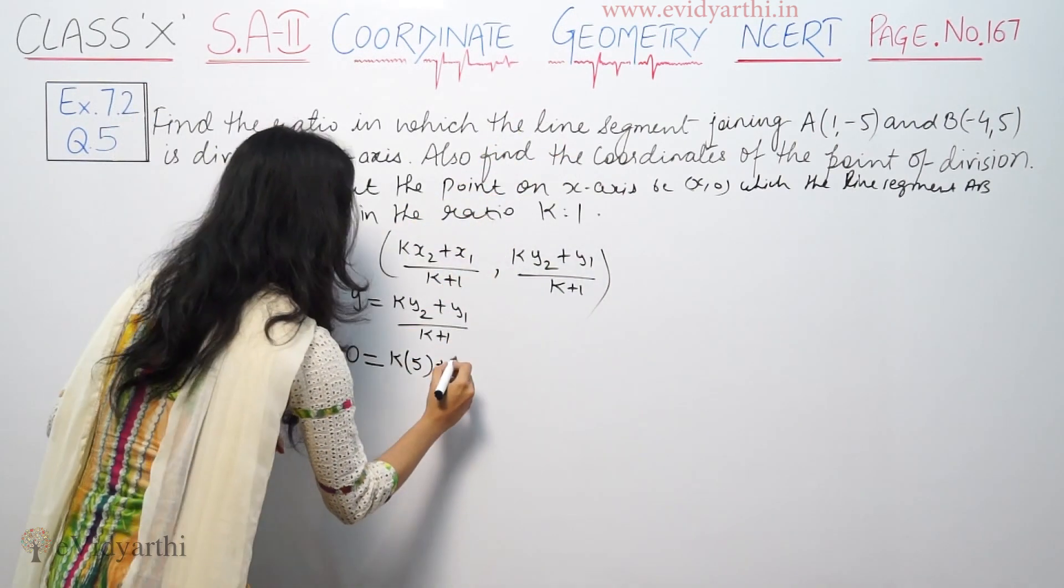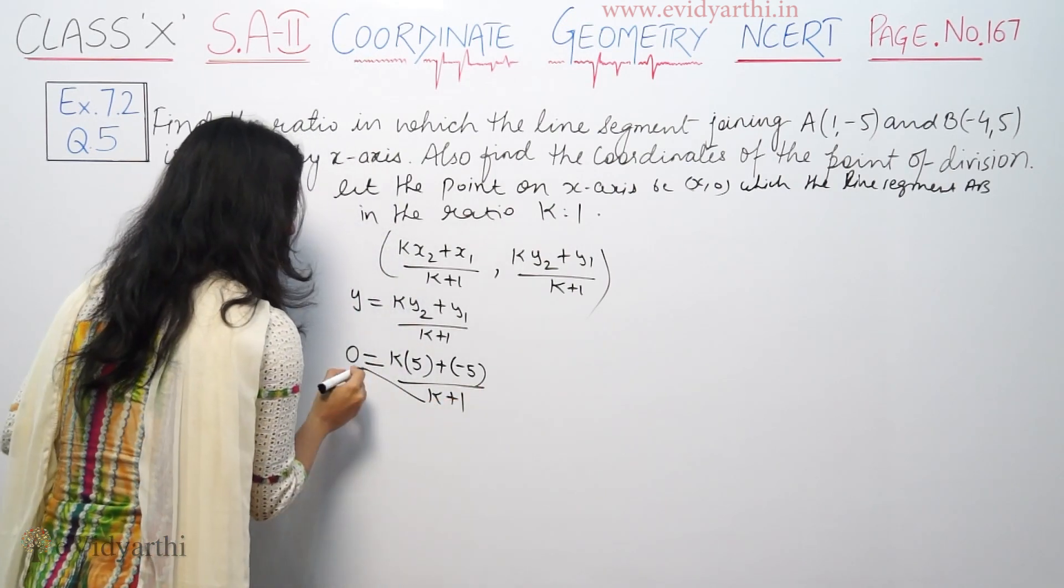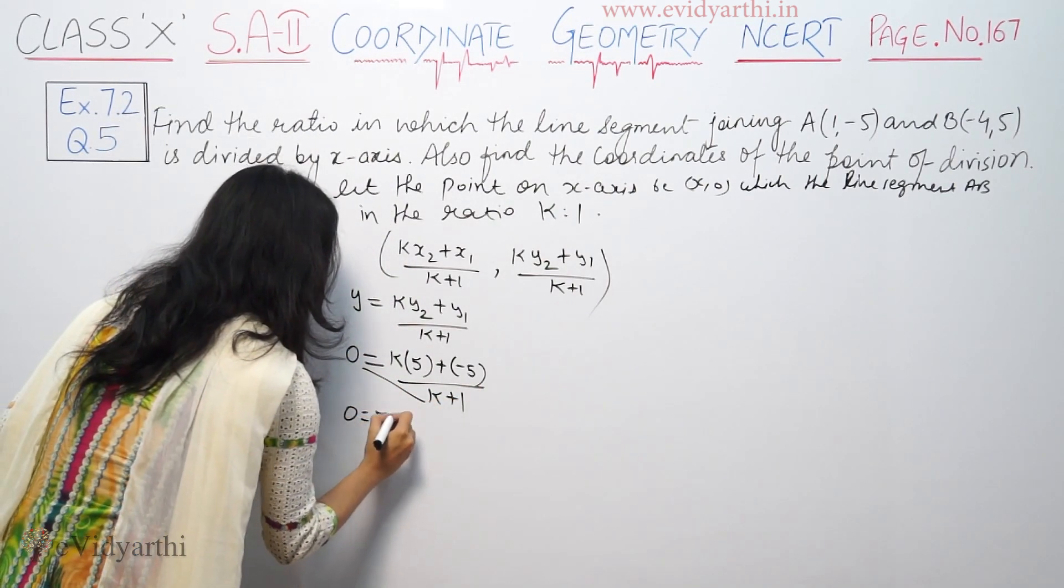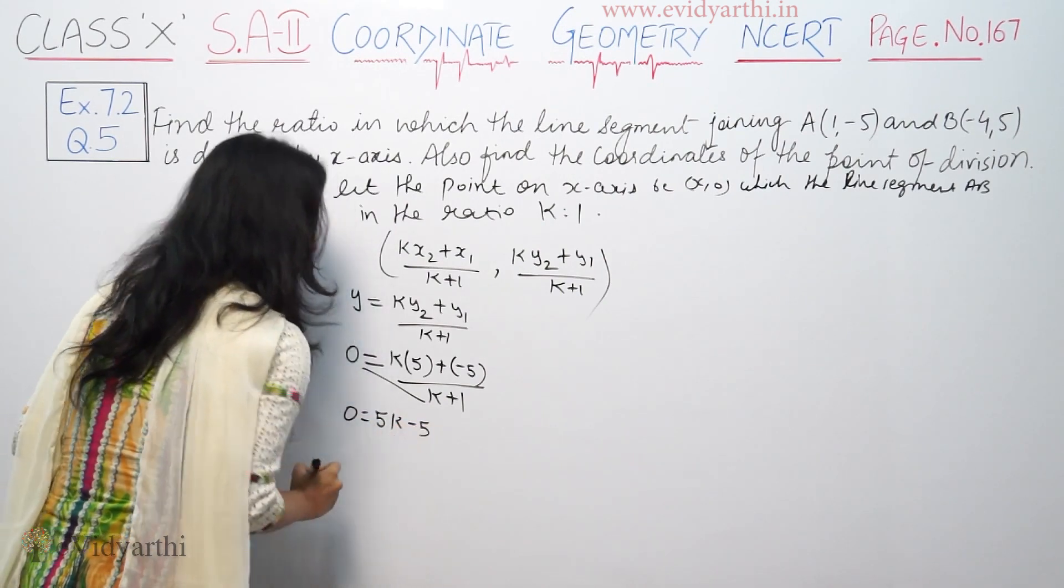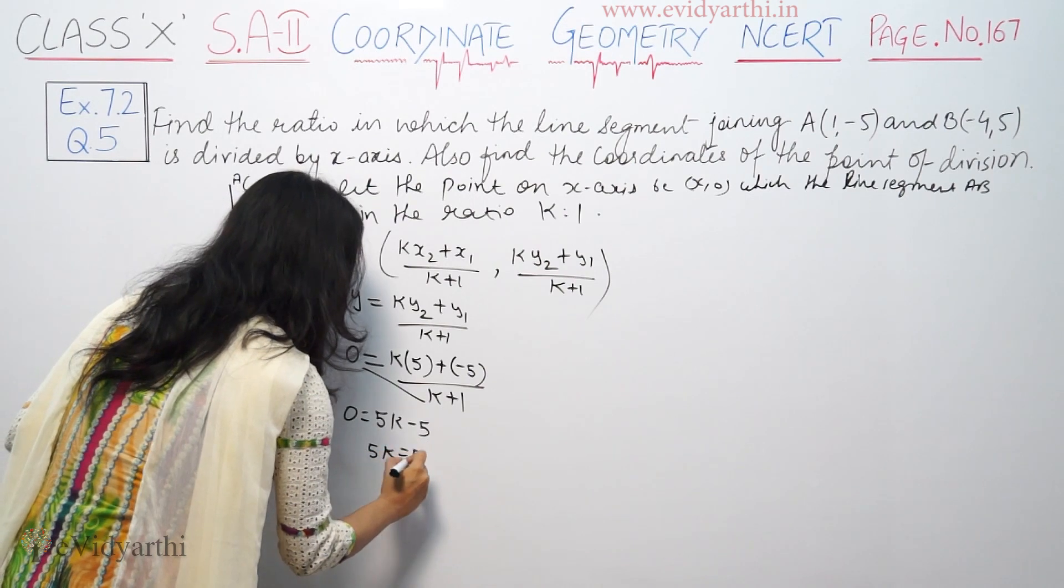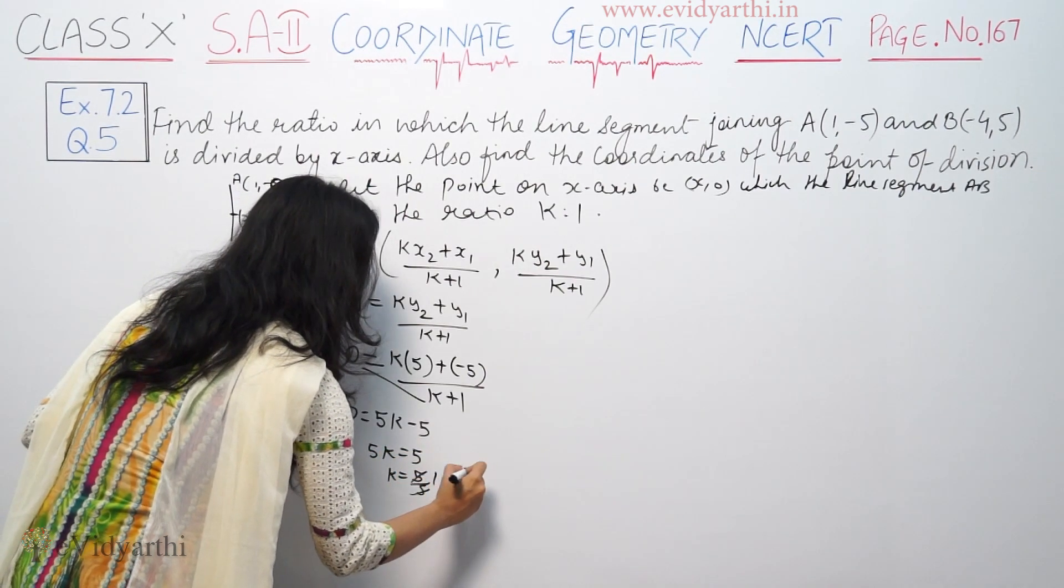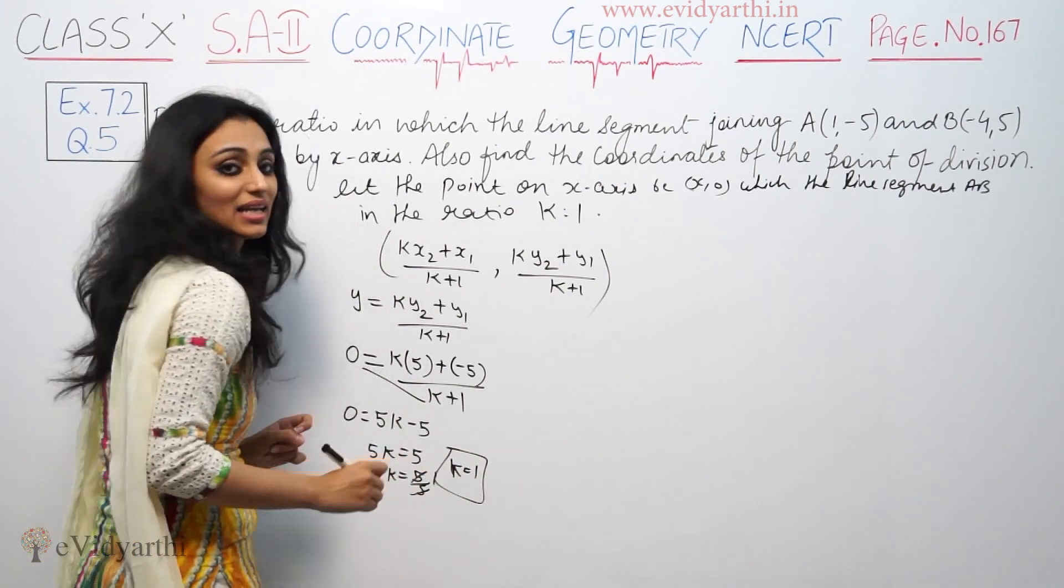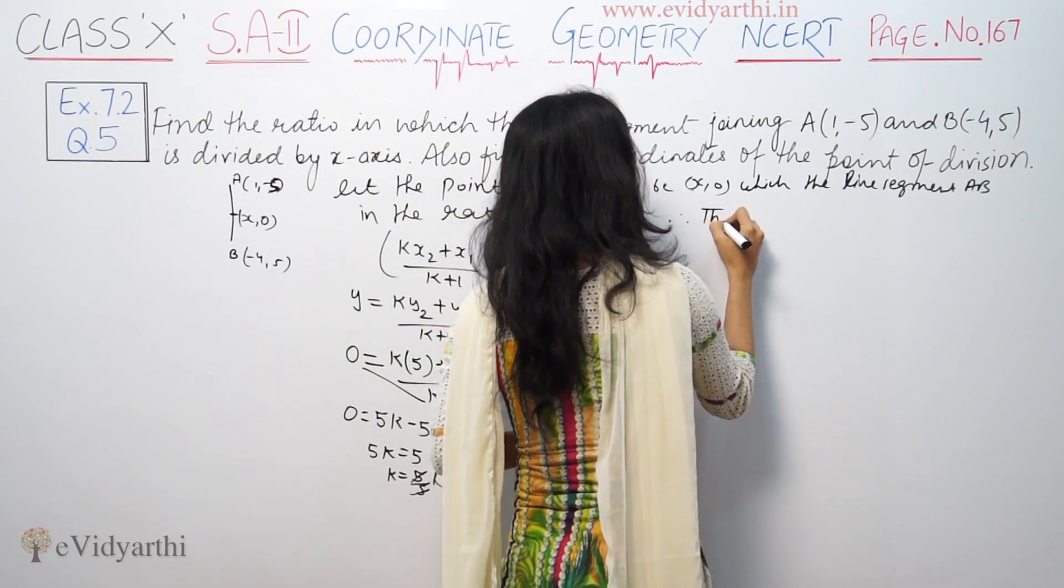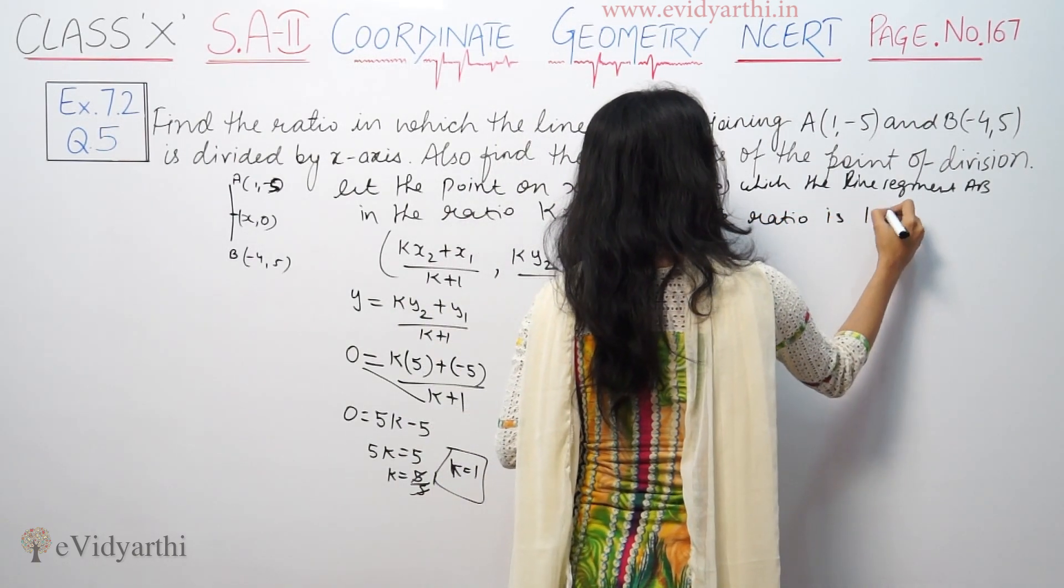Solving for k, we get k = 1. Therefore, the ratio is 1:1.